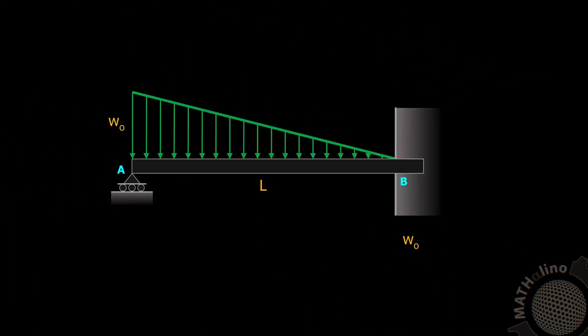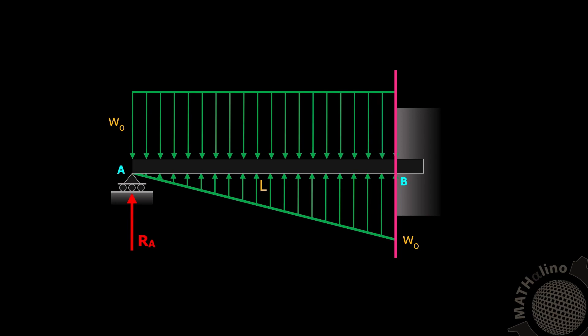Another way to solve this case is by taking the fixed support B as the moment center for the moment diagram by parts. Our diagram will involve the reaction at A. However, the triangular load is not increasing toward our choice of moment center, so we revise it into an equivalent loading: a downward uniform load and an upward triangular load, both increasing toward B.